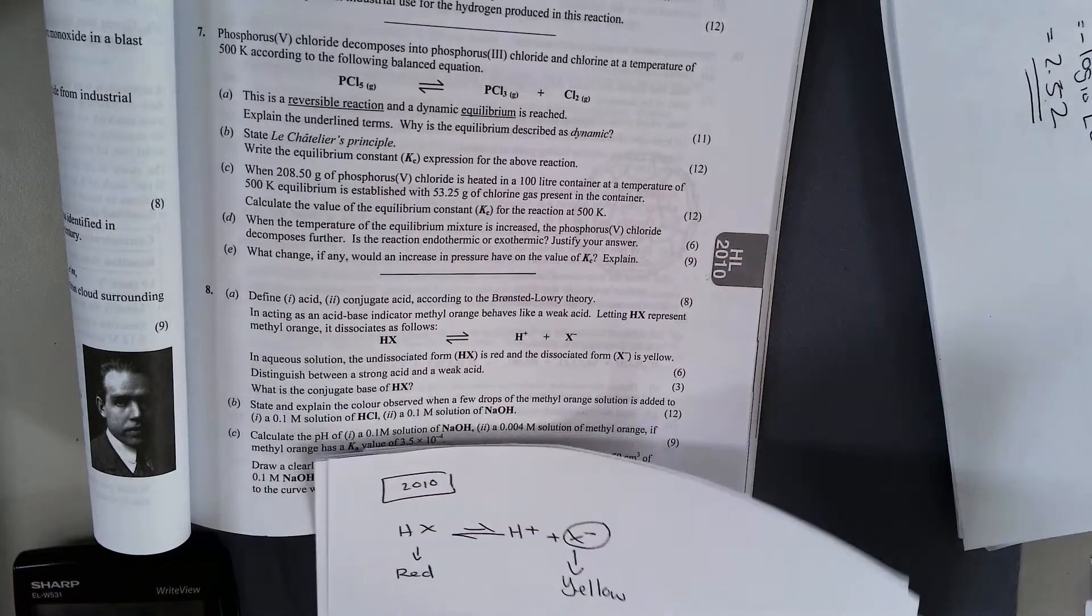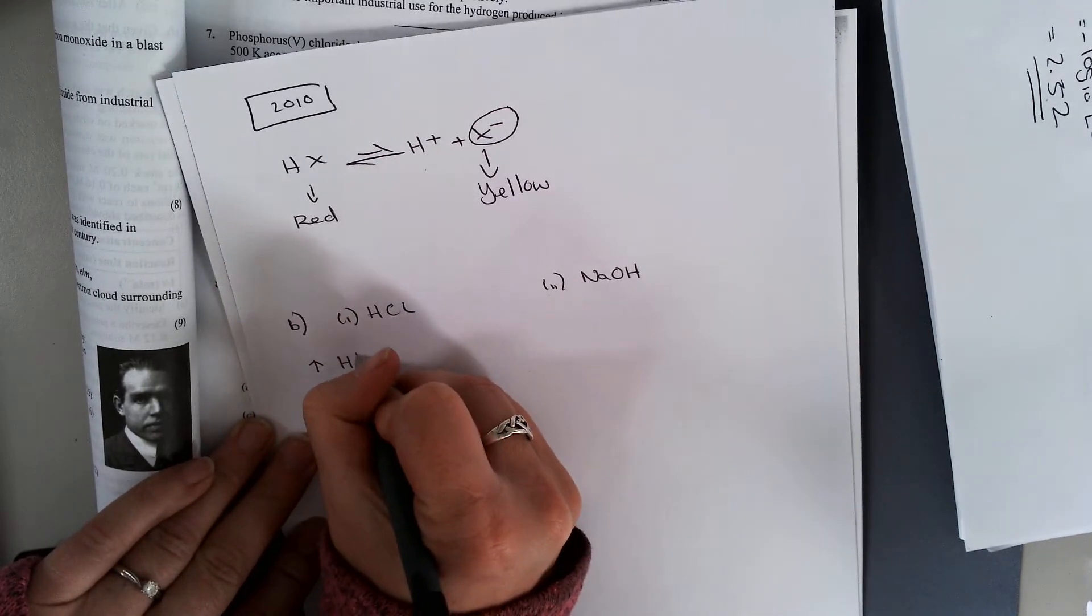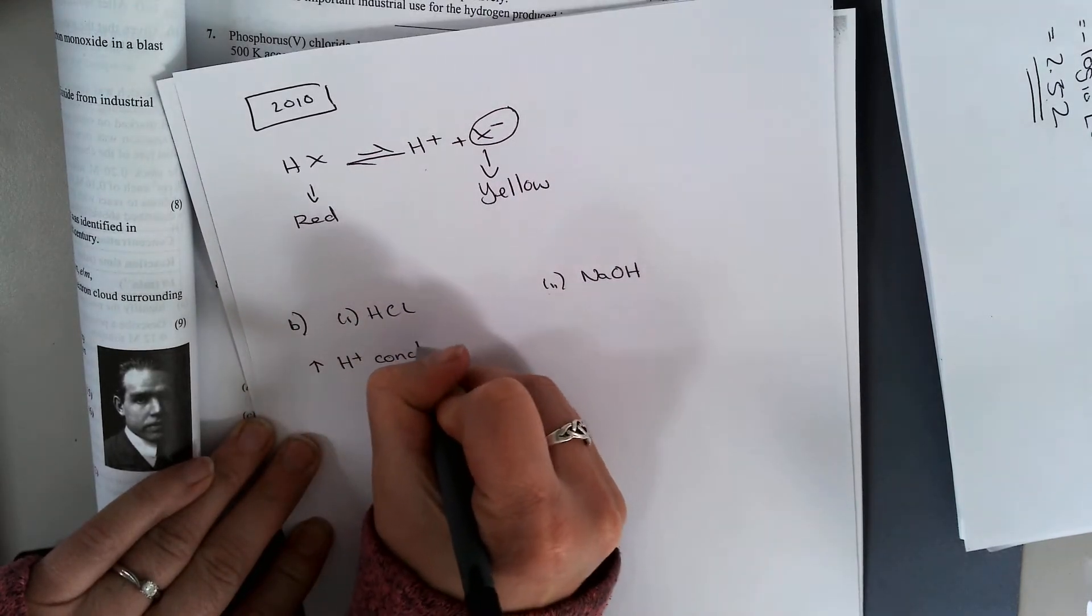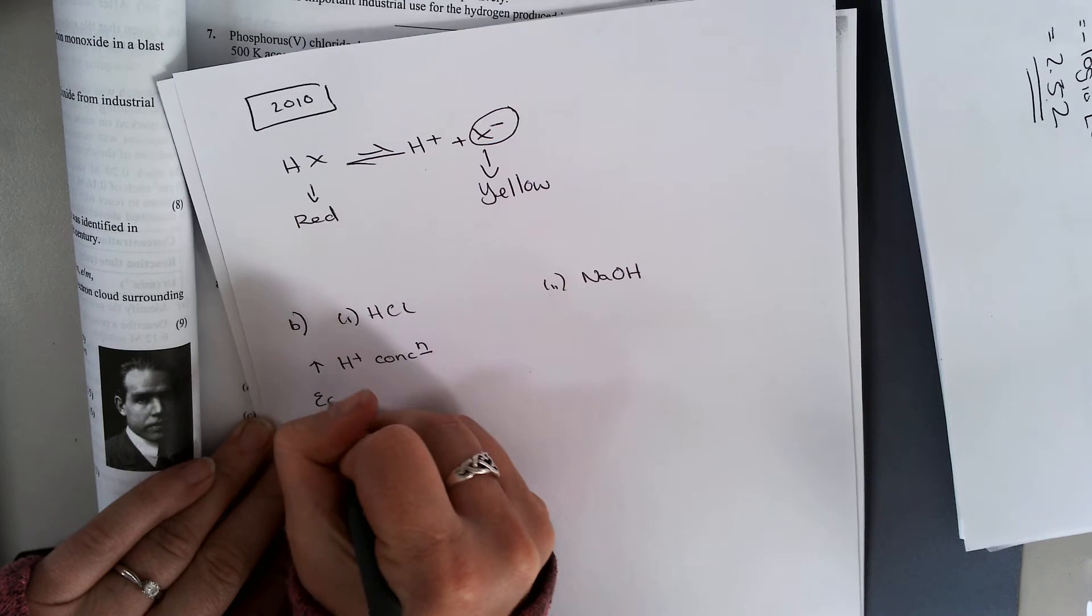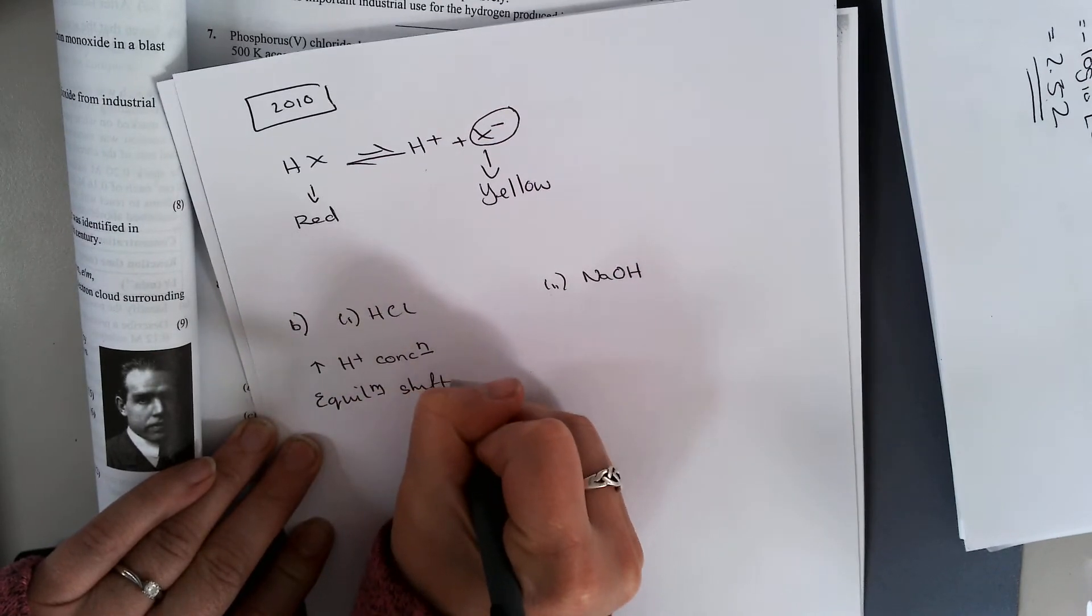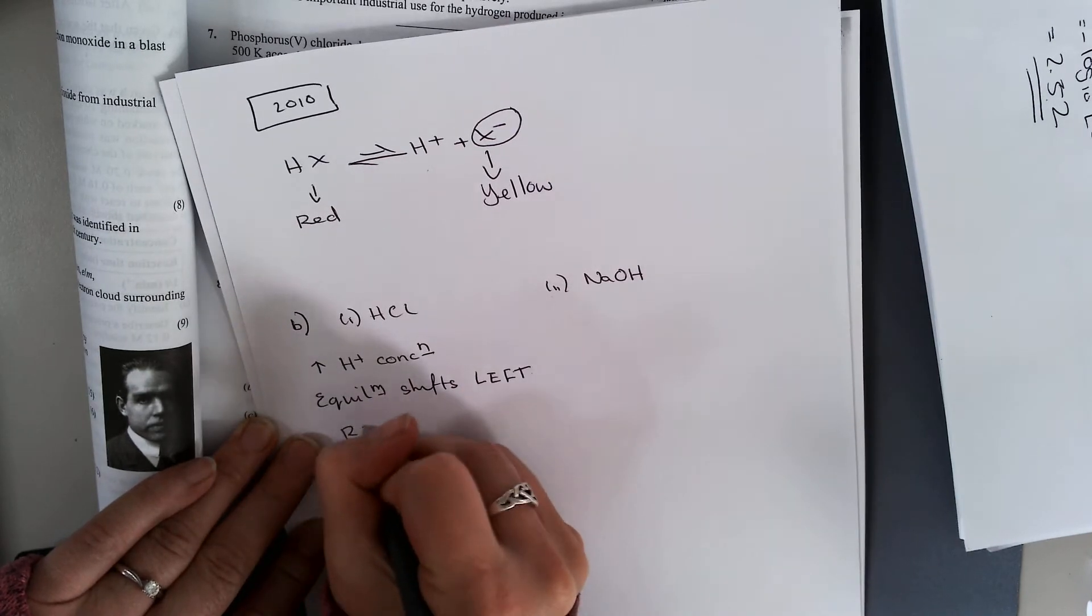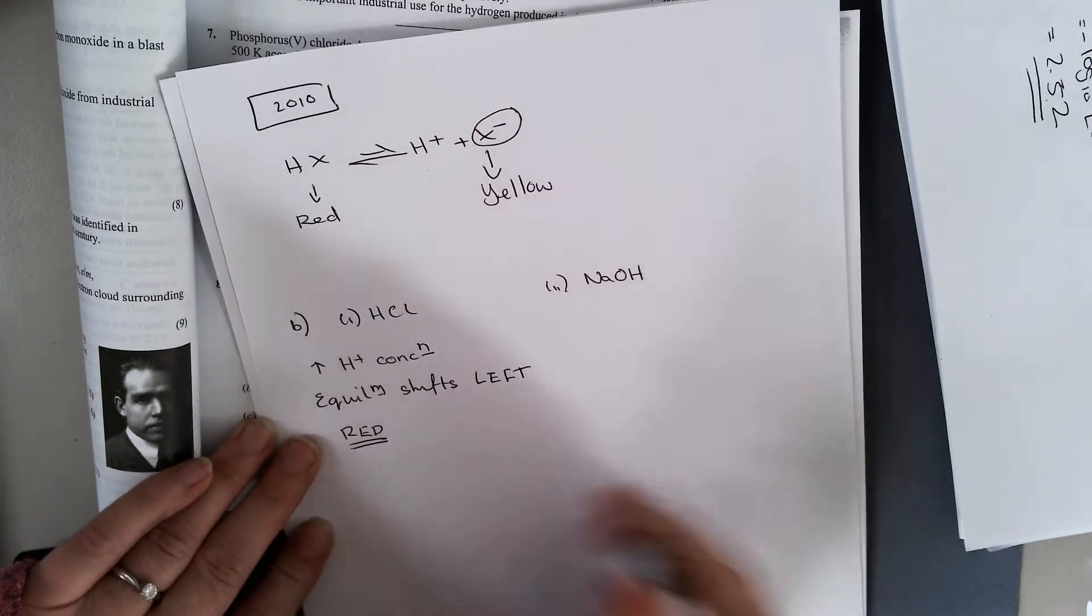If I have HCl, I'm increasing my H plus ion concentration. Because of that, my equilibrium shifts left. So my color there will be red.